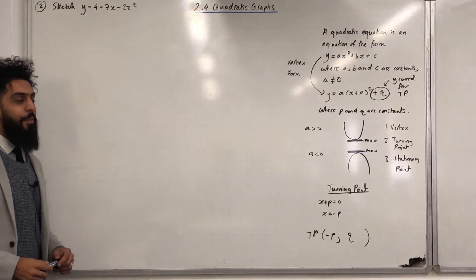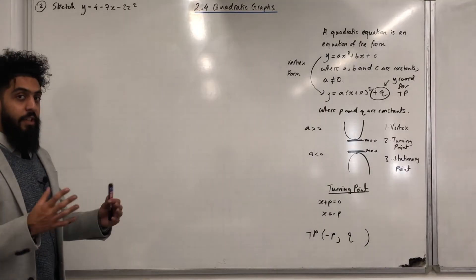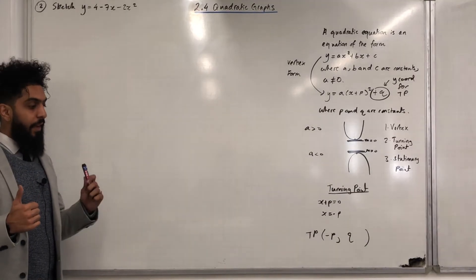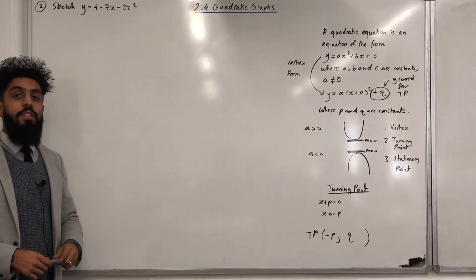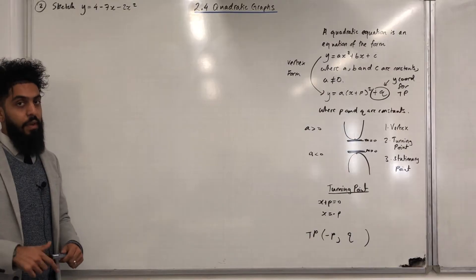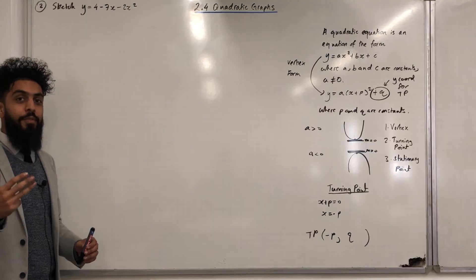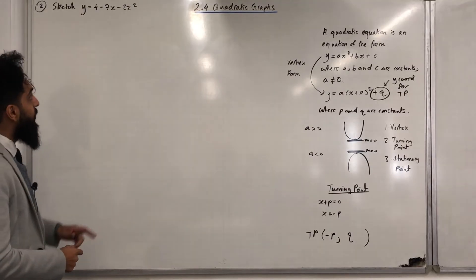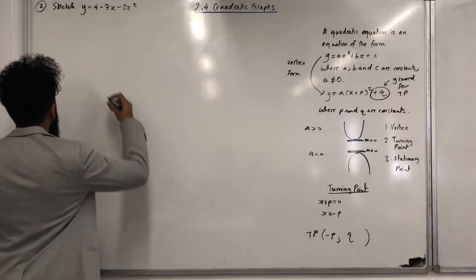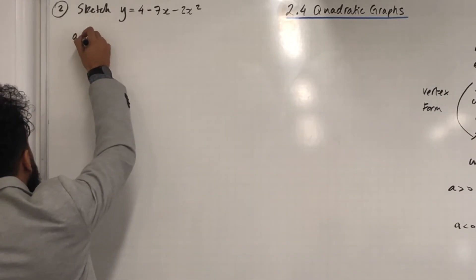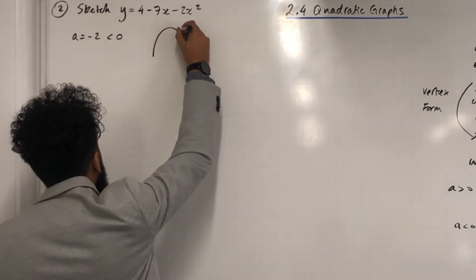Let's have a look at another example. Example number two: sketch y = 4 − 7x − 2x². The four steps are the same: Step 1, look at the coefficient of x² — is it more than 0 or less than 0? The coefficient of x² is −2, which is less than 0, so the shape will be an upside-down U-shape.